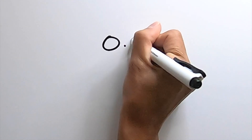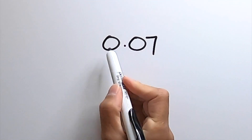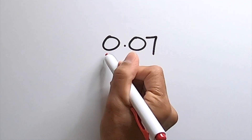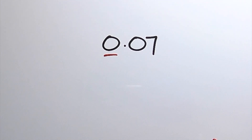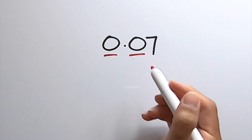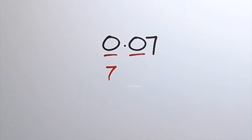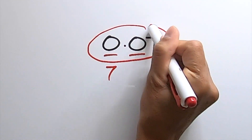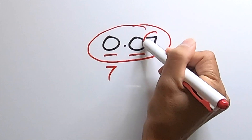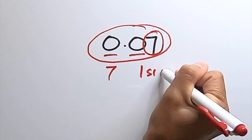Or the number 0.07 — these two zeros have to be written. This zero has to be written based on convention of writing decimals, and this zero has to be written as a placeholder. Otherwise, without these two zeros, this would just be the number 7. So the number 0.07 only has one sig fig.